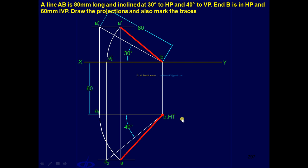Shall we see the vertical trace now? For vertical trace, you have to start from top view. Extend AB till it cuts XY. Mark that point as V.